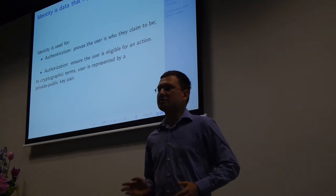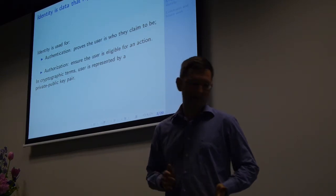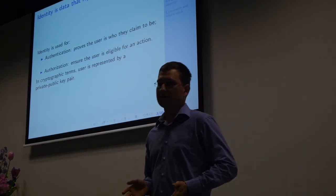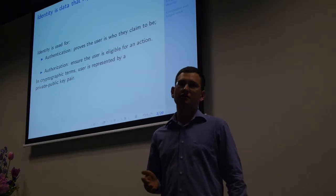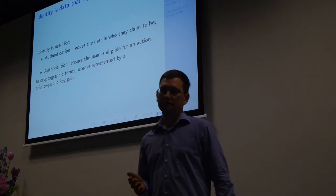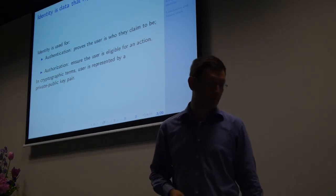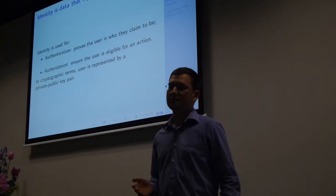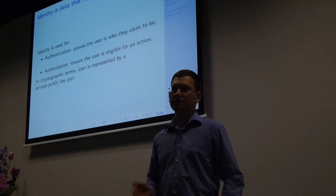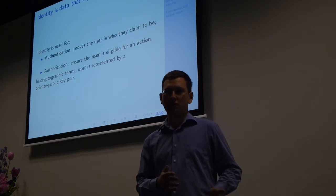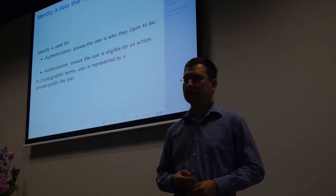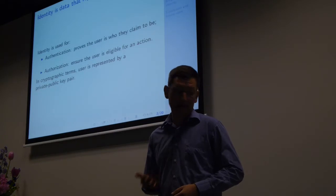Identity in general is some data that represents a user in a digital system. It's used for authentication — making sure that the user is really who they claim to be — and then authorization, making sure that the user is eligible for the action they are trying to perform. If we reformulate this in cryptographic terms, we are trying to maintain the correspondence between real-world identities such as users or companies and public-private key pairs, where users use their private keys to sign messages and perform actions.